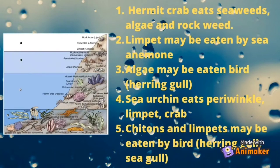Number one: hermit crab eats seaweeds, algae, and rockweed. Number two: limpet may be eaten by sea anemone. Number three: algae may be eaten by a bird, e.g., herring gull. Number four: sea urchin eats periwinkle, limpet, and crab. Number five: chitons and limpet may be eaten by birds, e.g., herring gull and sea gull.